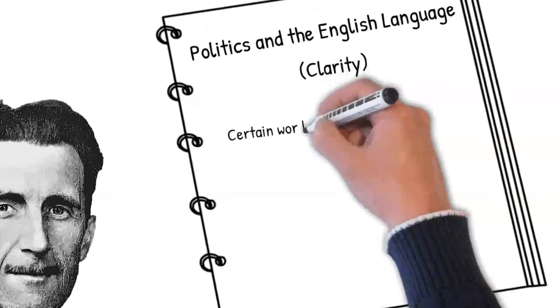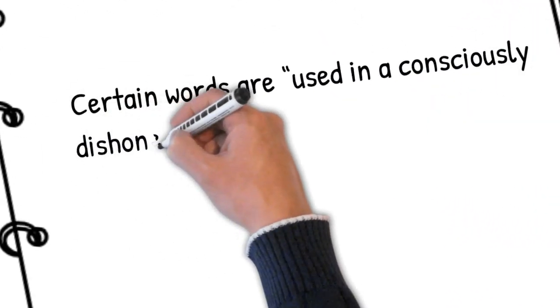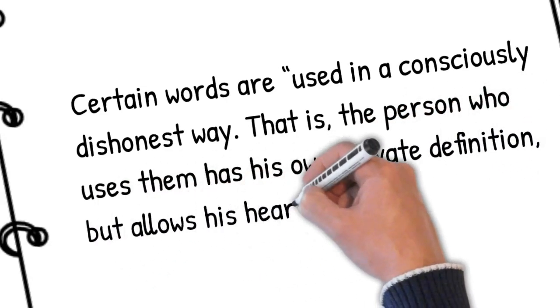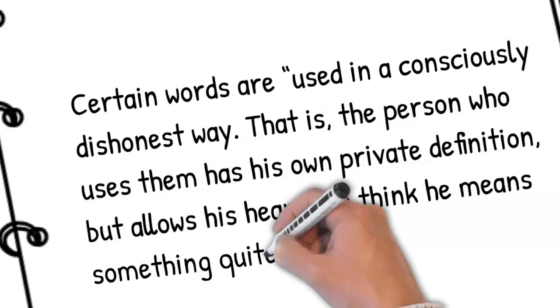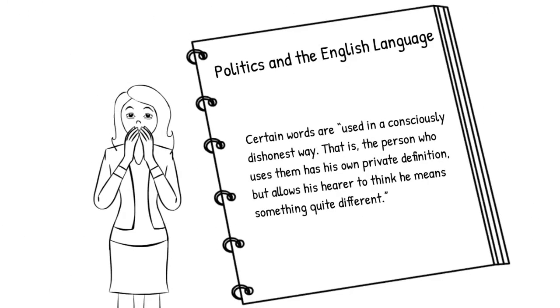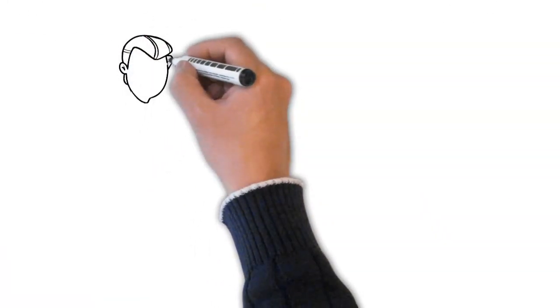Much of this essay directly addresses the issue of clarity. For instance, he says certain words are used in a consciously dishonest way. That is, the person who uses them has his own private definition, but allows his hearers to think he means something quite different. No one would ever do that today, right? Unfortunately, this is all too familiar.